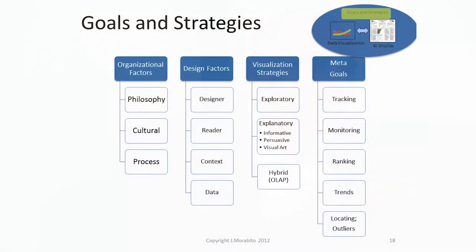For goals and strategies, we have various levels of abstraction — the organization's general philosophy, its culture, its business processes, and design factors and goals. I'd like to explore the visualization strategies column: whether they're exploratory, explanatory, or a hybrid. Exploratory visualization means we have lots of data but we don't know what the data tells us — we have to discover the story in the data. Explanatory means we already know the story and now we're trying to communicate it. That has typically been what most people think of as visualization.